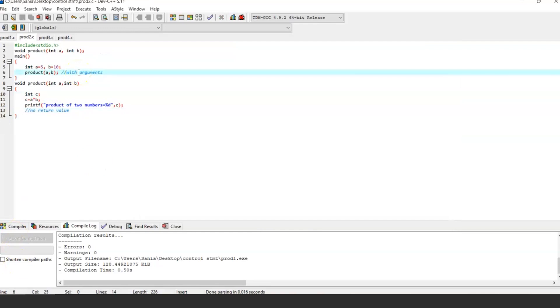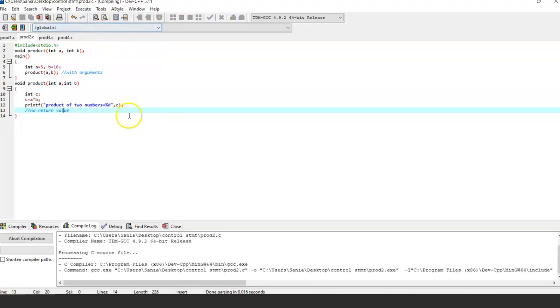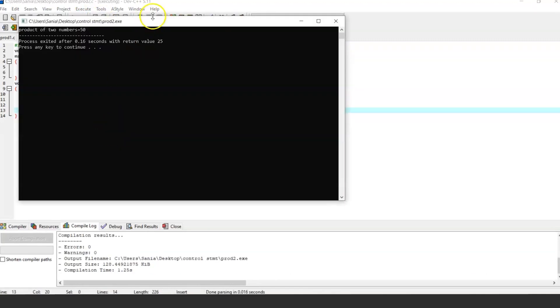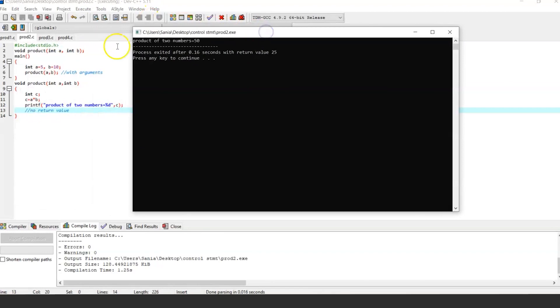Now let's run the program using a function with arguments and no return value, and let's perform the same operation, that is multiplication. As you can see, product of two numbers is equal to 50, and we got an output.